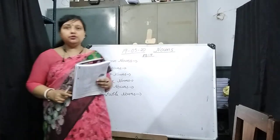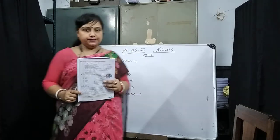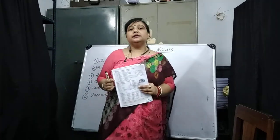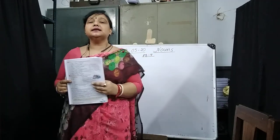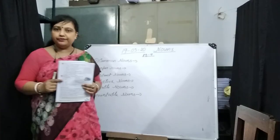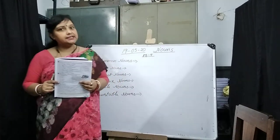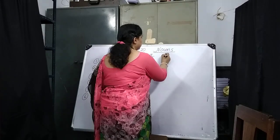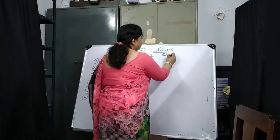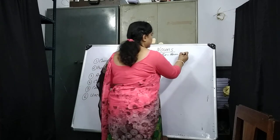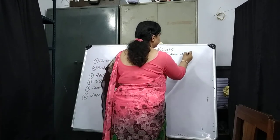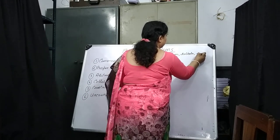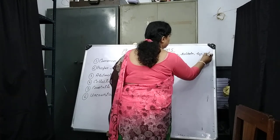First of all, you have to know what nouns are. Naming words are called nouns. Names of persons, places, animals, things, or even ideas are called nouns. For example: Ram, Kolkata, boy, girl, etc.